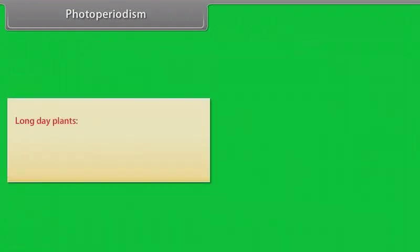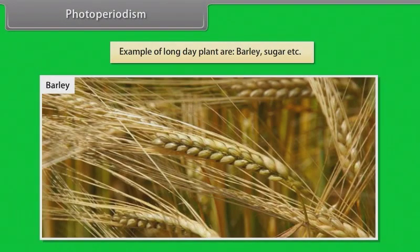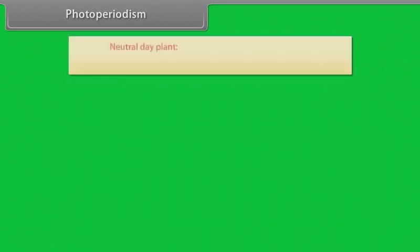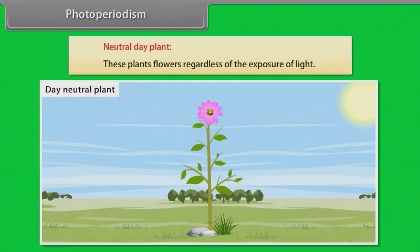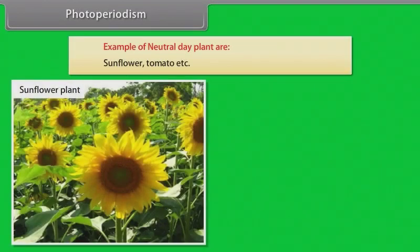Long day plants - these plants induce flowering when day length exceeds critical day length. Examples of long day plants are barley and sugar beet. Neutral day plants - these plants flower regardless of the exposure of light. Examples of neutral day plants are sunflower and tomato.